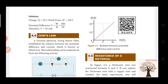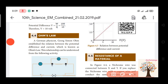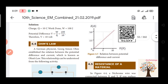If the current is increased, the voltage will also be increased, since V = IR — they are directly proportional. If we plot this, we will see the graph as a straight line.